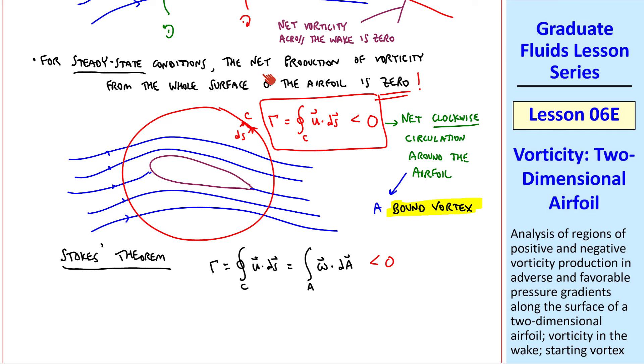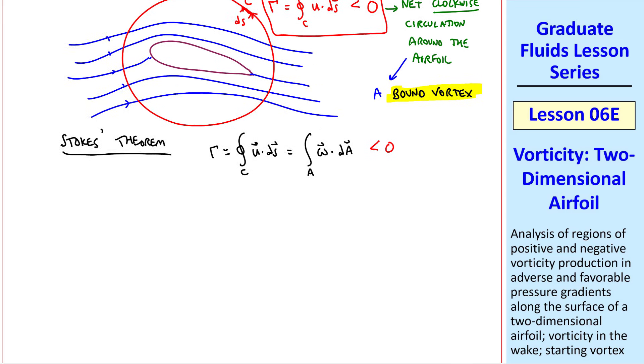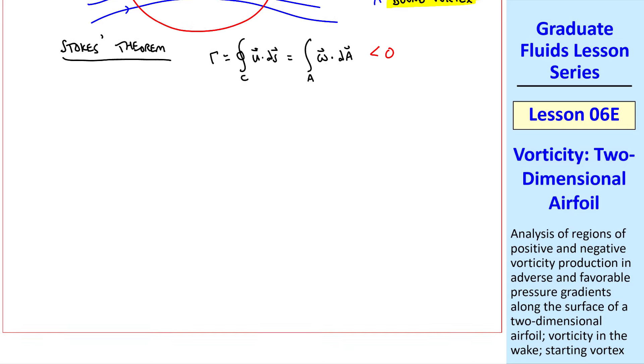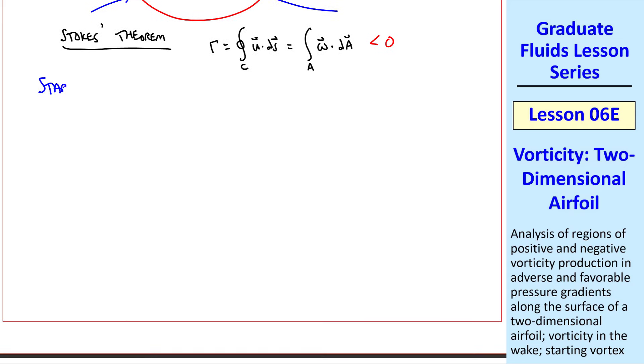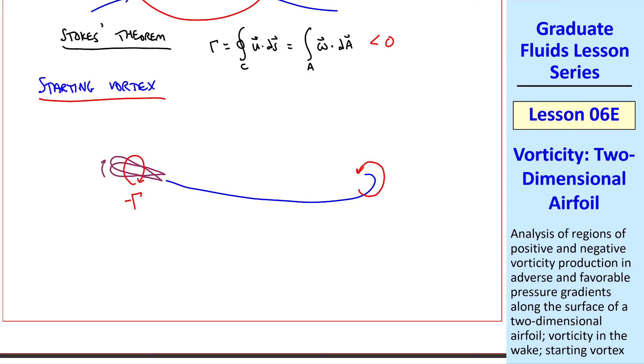But how can this be if the net production of vorticity from the whole surface of the airfoil is zero? How did we get this bound vortex? If any of you are aerospace or aeronautical engineering students, you'll remember discussing something called the starting vortex. Way back at the airport, when the airplane increased its angle of attack to take off, the bound vortex was established, namely negative circulation, and a starting vortex of opposite sign, positive circulation, remains at the airport.